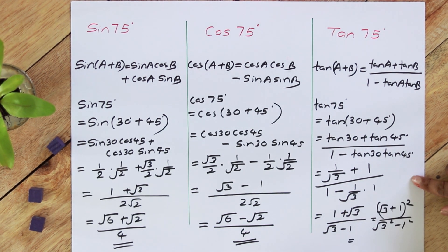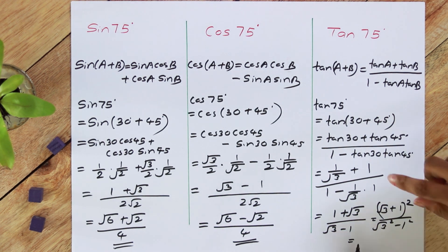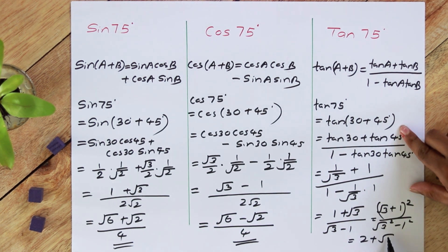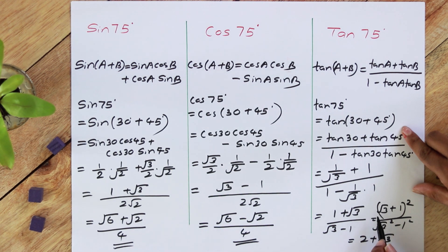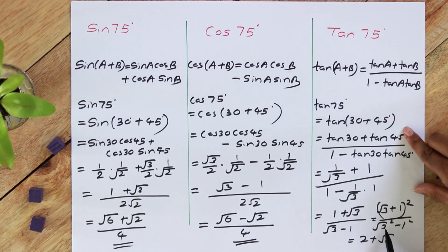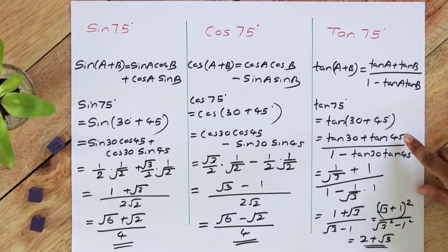Simplifying: the numerator expands to 3 plus 2 root 3 plus 1, which is 4 plus 2 root 3, and the denominator is 3 minus 1, which is 2. So dividing by 2, you get 2 plus root 3 as the final answer for tan 75.